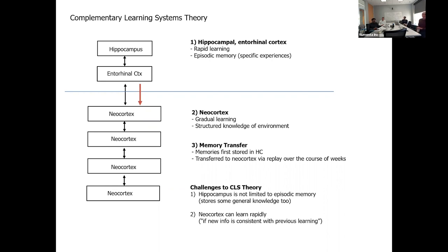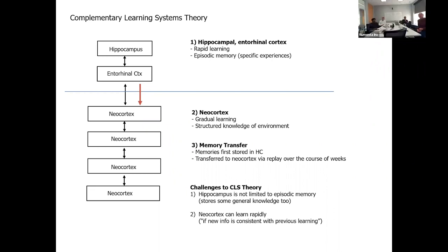If there's a reward or big reinforcement signal — like food or pain — you can learn very rapidly. Also, H.M. could actually learn new things. He couldn't remember how he learned them, but he could learn new motor skills. It's complex.